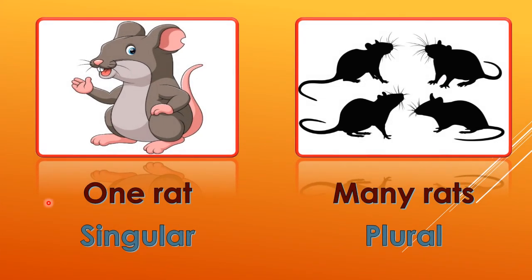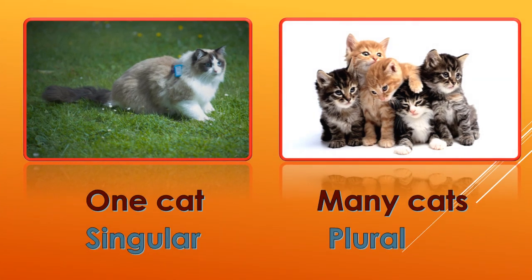See now children — one red. One red means what? Singular. Singular — one red. Plural — many reds. One cat — singular. Yes children, one cat is singular because singular means only one. Many cats — plural. Plural means many, so many cats is plural.